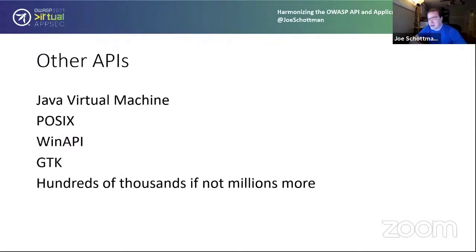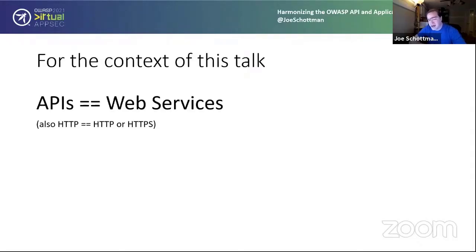There are many other famous APIs — the Java Virtual Machine, POSIX used on Unix and Windows, the Windows API itself, GTK for graphical displays across platforms — basically hundreds of thousands if not millions of other APIs. For this talk I'll use 'APIs' and 'web services' interchangeably, and when I say HTTP I could mean either HTTP or HTTPS unless I'm specifically talking about encryption problems.